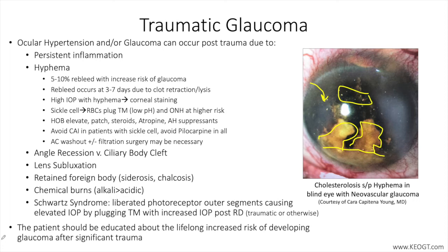Retained foreign body leading to siderosis, as is the case with iron, or chalcosis, as is the case with copper, may lead to toxicity with subsequent compromise of the aqueous humor outflow system. With siderosis, iron may accumulate in the trabecular meshwork causing toxicity and cell death. Chalcosis occurring from copper foreign bodies can lead to severe inflammation and necrosis, with widespread ocular damage including development of glaucoma.